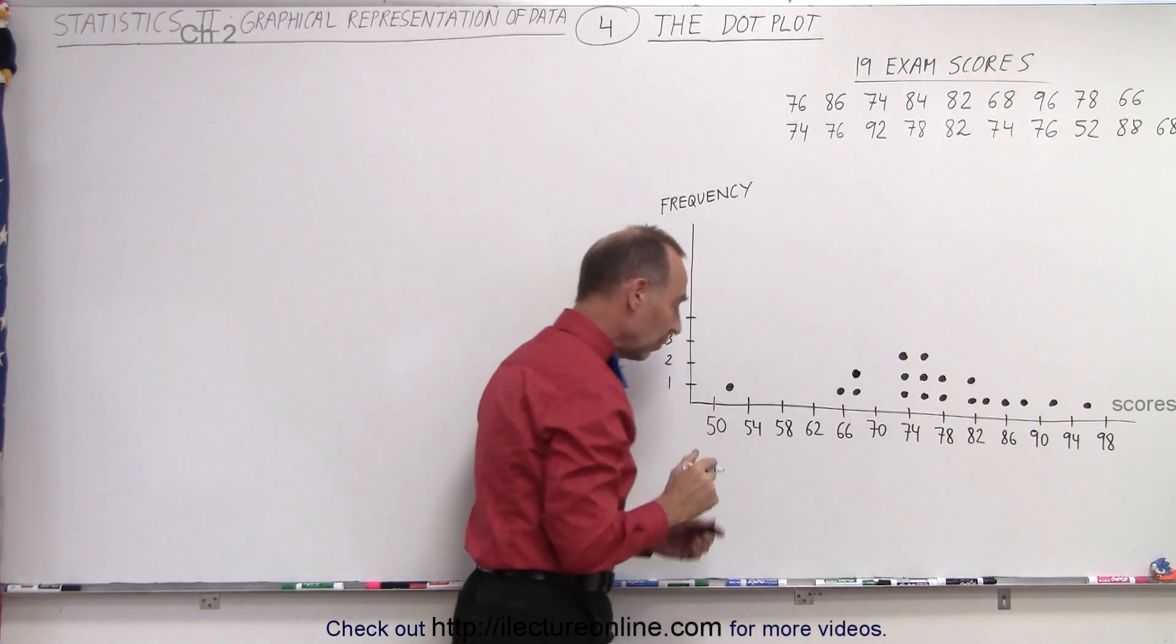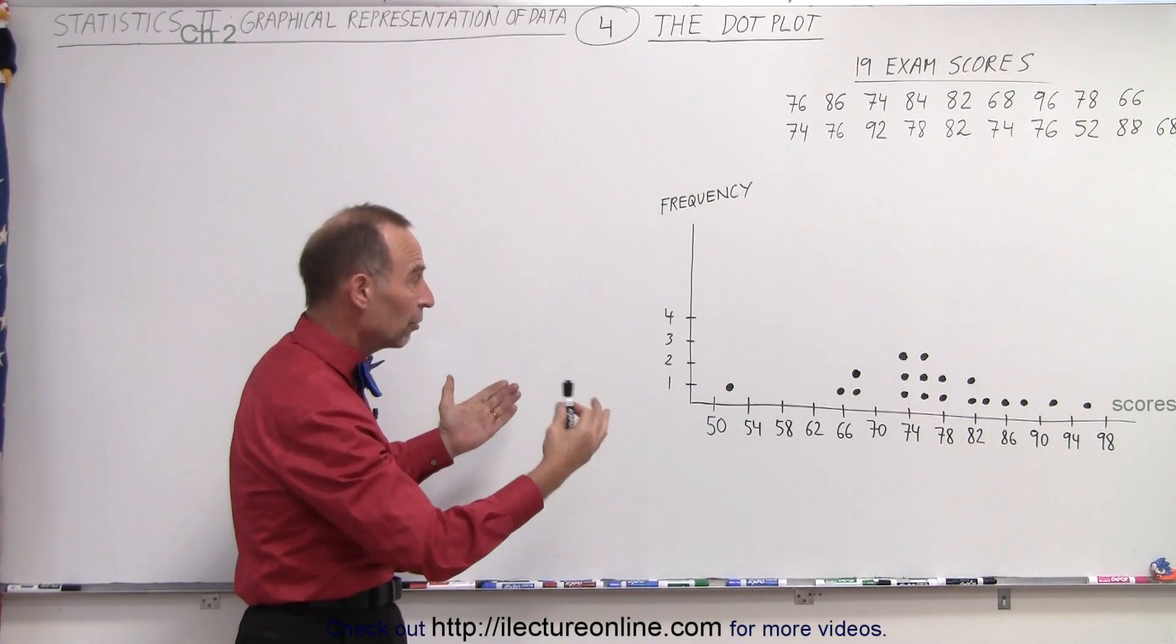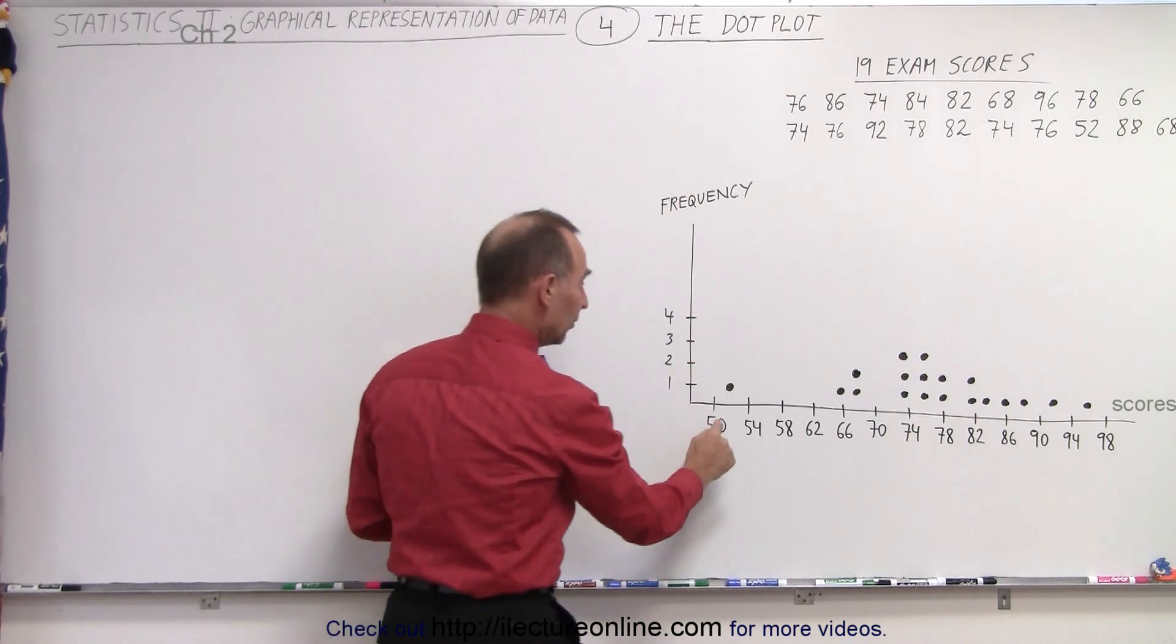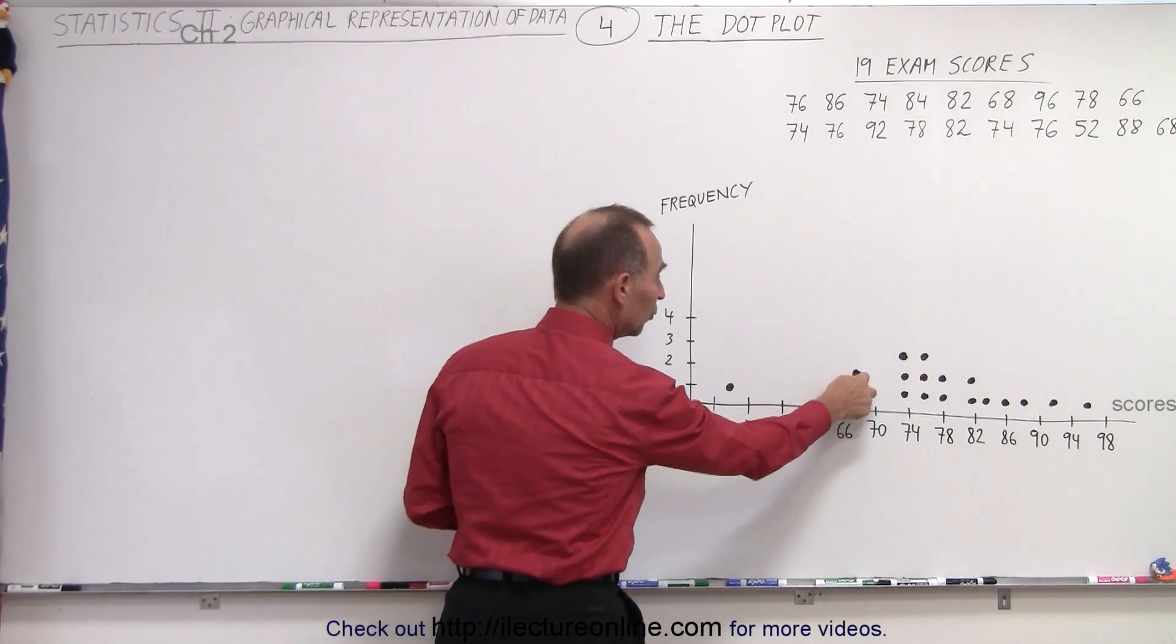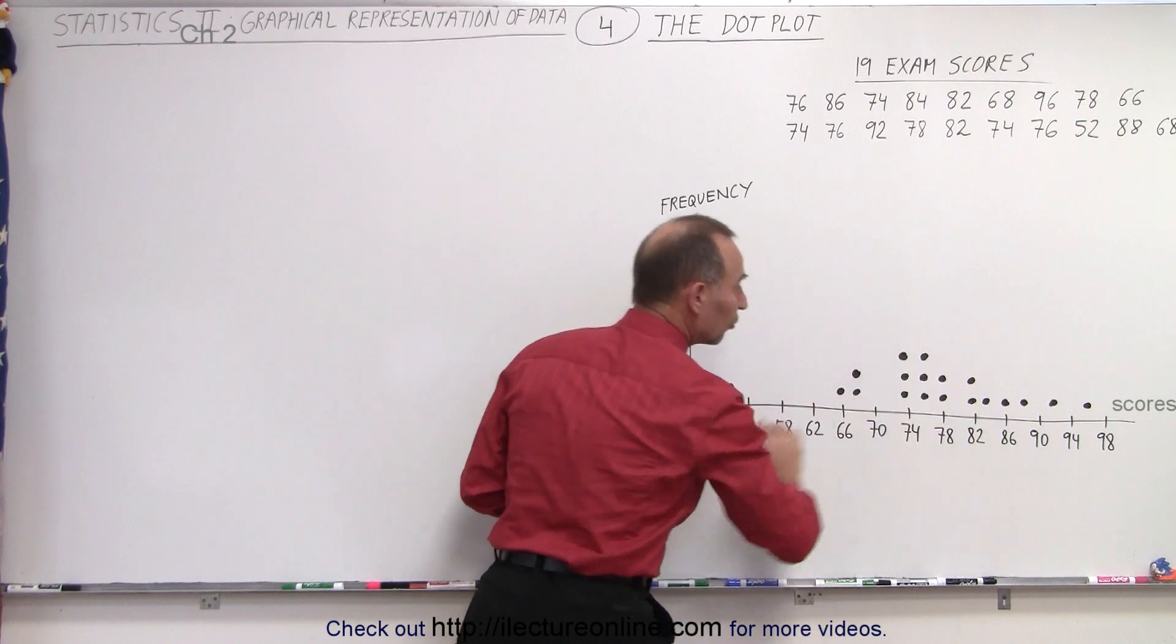All right. So very quickly you have kind of a pseudo bar graph where you have the frequency: frequency of 1, 1, 2, 3, 3, 2, 2, 1, and so forth.